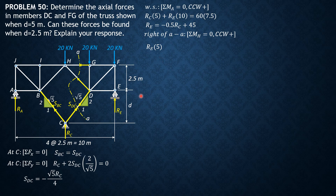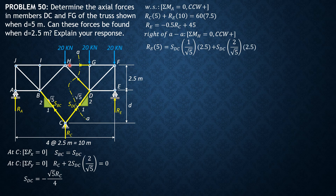Counterclockwise positive: R_E times 5 equals the clockwise terms — the horizontal component of S_DC times (1 over square root of 5) times 2.5, plus the vertical component of S_DC times (2 over square root of 5) times 2.5, plus 20 times 2.5, plus 20 times 5.